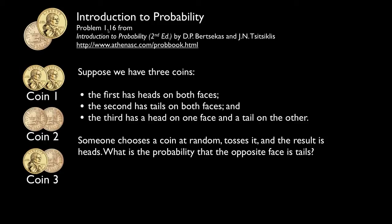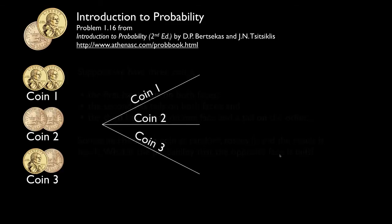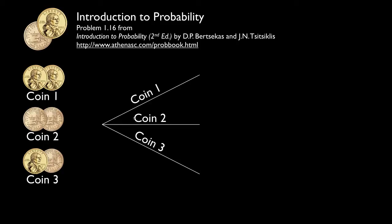Problem 16: We have three coins. Coin 1 has heads on both sides, coin 2 has tails on both sides, and coin 3 has heads on one side and tails on the other. A coin is chosen at random and tossed; the result is heads. We want the probability that the opposite face is tails — that is, that coin 3 was selected. Each coin is equally likely to be chosen, probability one-third each.